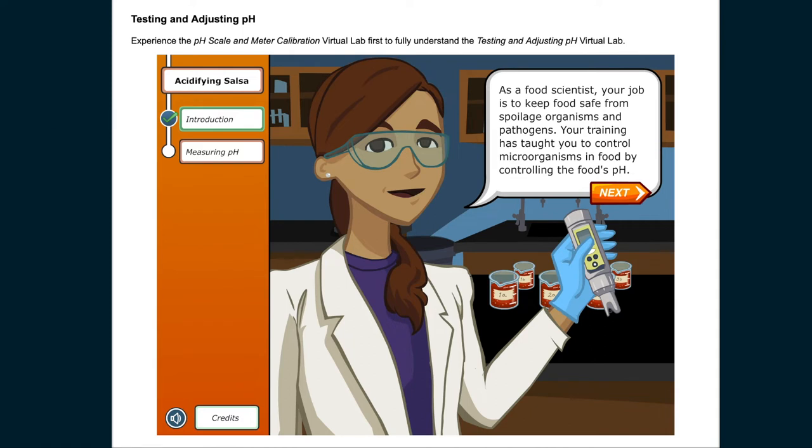As a food scientist, your job is to keep food safe from spoilage organisms and pathogens. Your training has taught you to control microorganisms in food by controlling the food's pH.